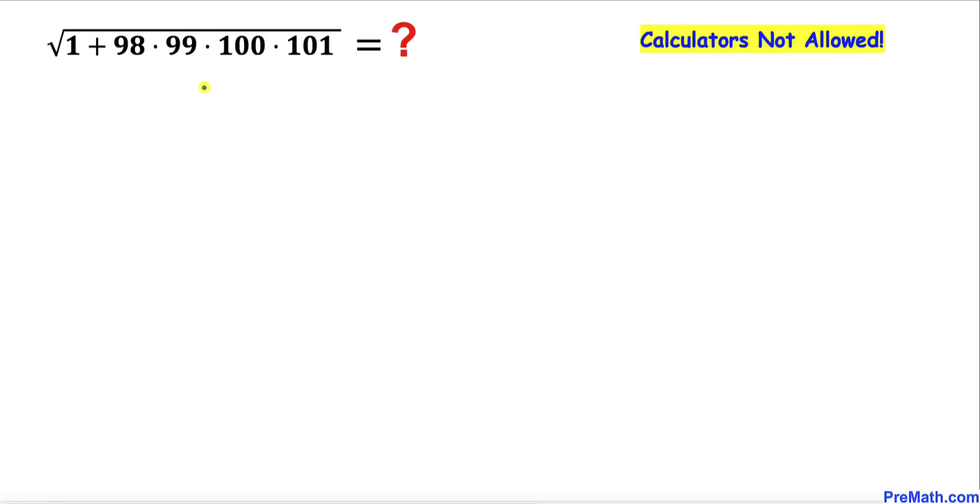Welcome to PreMath. In this video we are going to simplify this given radical expression: square root of 1 plus 98 times 99 times 100 times 101. Please don't forget to give a thumbs up and subscribe.